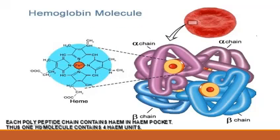All of you know the structure of the hemoglobin molecule. The hemoglobin molecule has four subunits and each subunit has a pocket where the heme can bind. Thus, one hemoglobin molecule contains four heme units.